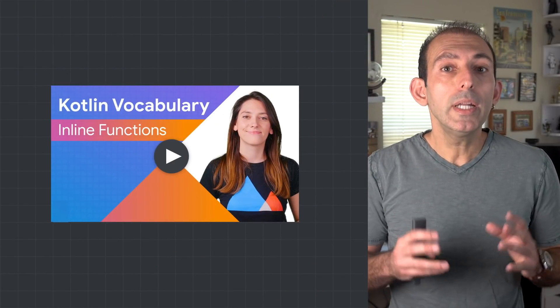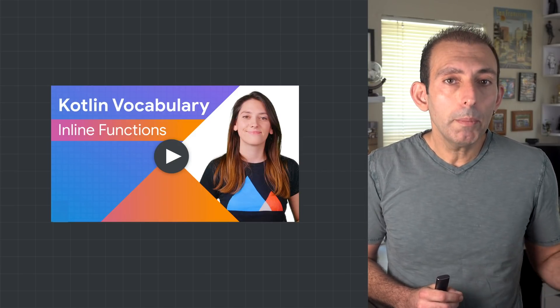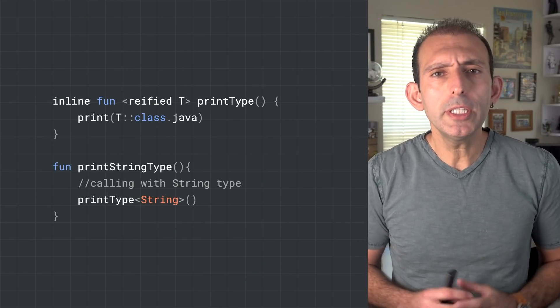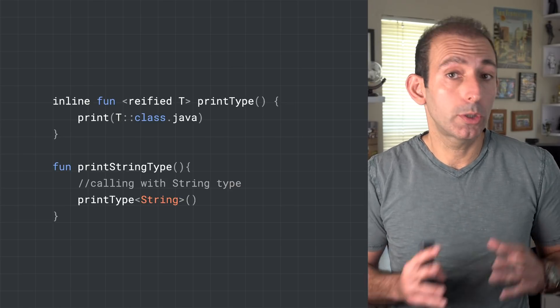Meanwhile, type erasure can be limiting when you need the type info in a generic function. Now, let's see how reified manages to access type info at runtime that should have been erased at compile time. To tackle this problem, reified makes use of inline functions. If you are unfamiliar with inline functions, make sure you watch the inline functions video linked in the notes below. To recap, if a function is marked as inline, the Kotlin compiler will copy the function body to every place where it is used. One advantage of this is that the compiler is also free to modify the function body as it's being copied over. To use reified parameter types, you first need to make the function inline and then add the reified keyword to the generic parameter.